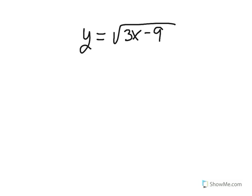Let's take a look at y equals the square root of 3x minus 9 and determine what the domain is. In other words, the values that x is allowed to take on. The expression underneath the radical is 3x minus 9. That needs to be greater than or equal to zero.